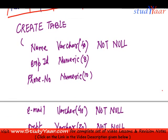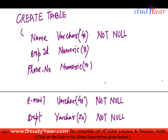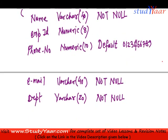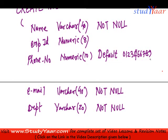I can also specify default values for my attributes. Let's suppose my company's phone number is 0123456789. Then I can say: if you don't enter a value for phone number, use this as the phone number. So if I miss entering phone number, a default value of 0123456789 would be stored as the phone number.